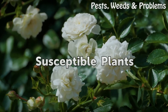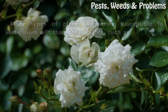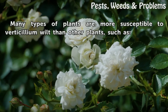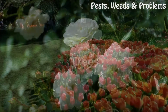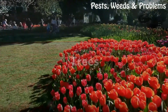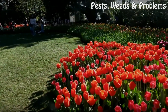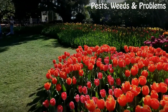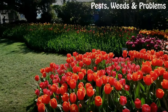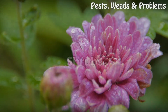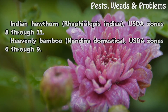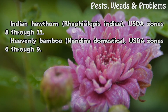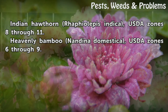Susceptible plants. Many types of plants are more susceptible to verticillium wilt than others, such as trees: Redbud (Cercis canadensis), hardy in U.S. Department of Agriculture plant hardiness zones 4 through 9. Shrubs: Indian hawthorn (Raphiolepis indica), USDA zones 8 through 11. Heavenly bamboo (Nandina domestica), USDA zones 6 through 9.